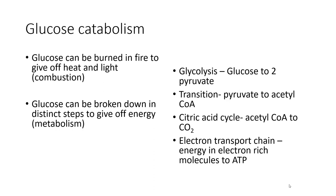We're specifically talking about glucose catabolism when we talk about cellular respiration. Glucose can be burned in a fire to give off both heat and light — if you doubt this, just pour some sugar on a fire and you'll see that it pretty much explodes. This is combustion, where glucose is turned very rapidly into CO2 and H2O. Glucose can also be broken down in distinct steps to give off discrete amounts of energy at each of those steps, and this is metabolism — specifically cellular respiration — which will have several steps.